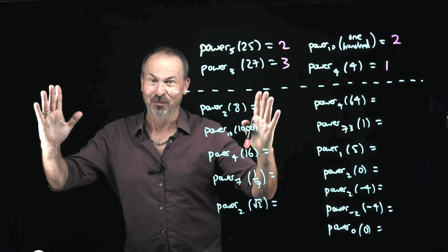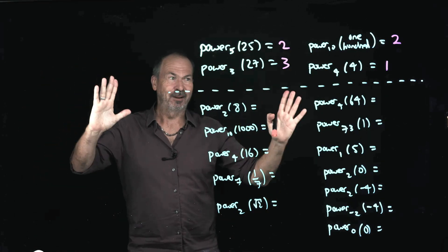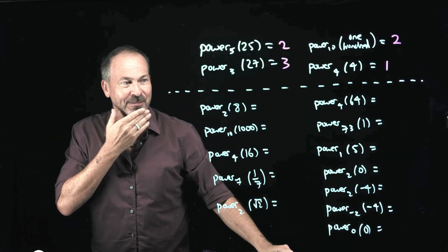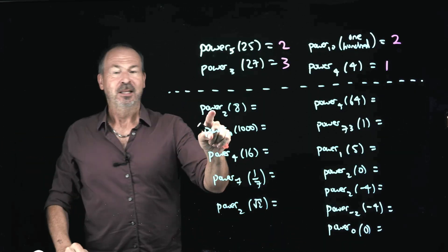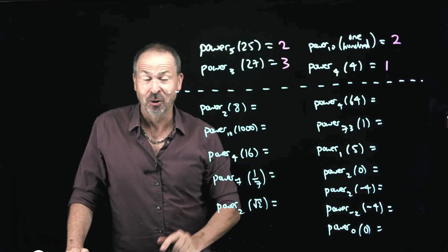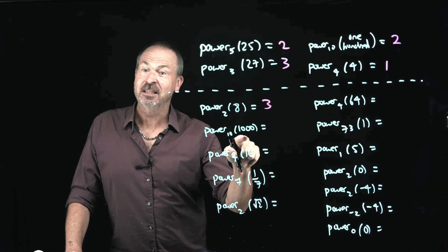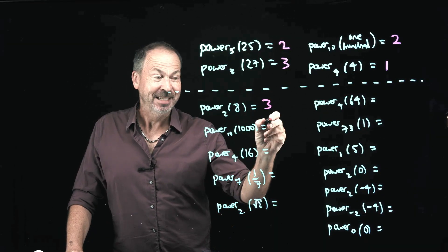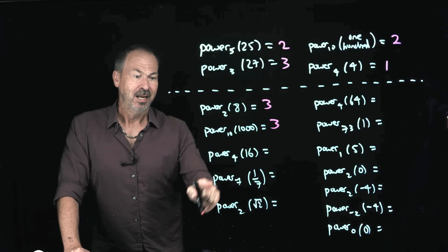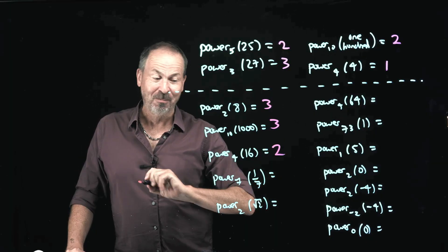So I guess we know our exponent rules here. As soon as we know our exponent rules, we can figure it out and do the rest of these — there's a lot of them. The power of 2 that gives the answer 8: 2 times 2 times 2, 2 cubed gives 8. The power of 10 that gives 1000: 10 to the power of 3, 10 cubed. The power of 4 that gives 16: that's 4 squared, 4 to the power of 2.